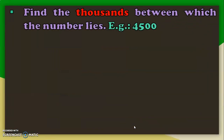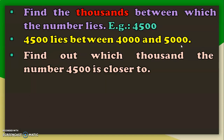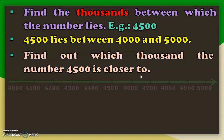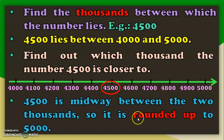Let us do another example. Consider the number 4500, which lies between the thousands 4000 and 5000. Using a number line, we can see that 4500 is at the midway between 4000 and 5000. As per the rule, we round it up to the higher limit. So, 4500 rounded off to the nearest 1000 is 5000.